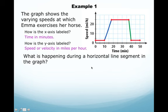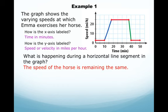What is happening during a horizontal line segment in the graph? So this is a horizontal line. Are we moving anywhere or are we staying still and for how long? The speed of the horse is remaining the same. So yes, we're moving somewhere but we're not going any faster or any slower, it's just staying the same speed.